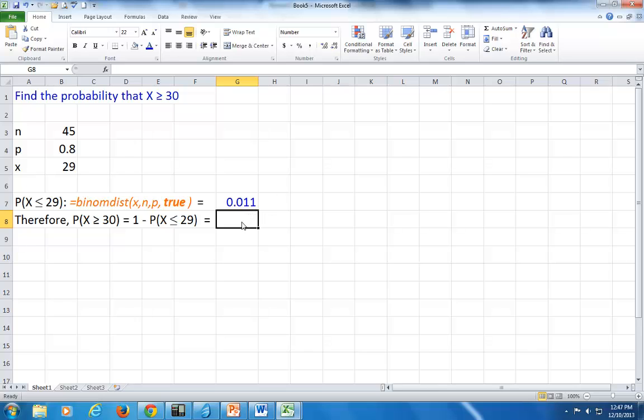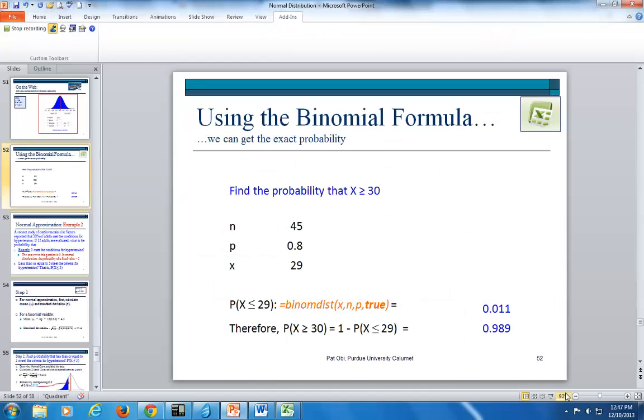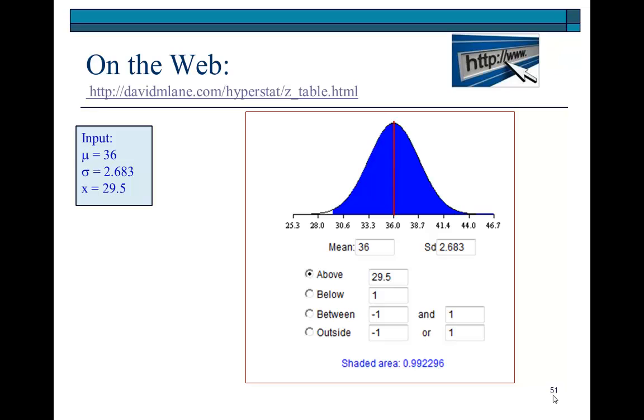Therefore, 30 and above, this being discrete. See, the binomial formula recognizes the discrete nature of it. And so, this would be 1 minus this probability right here. So, more correctly, it is 0.989 or 0.99, which is pretty much the same thing as what we got, using the normal approximation right here.